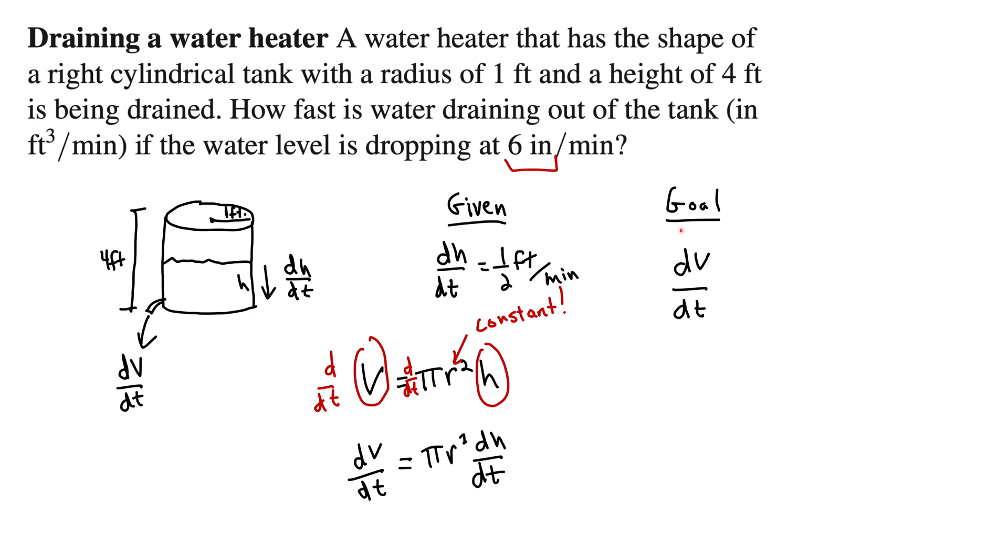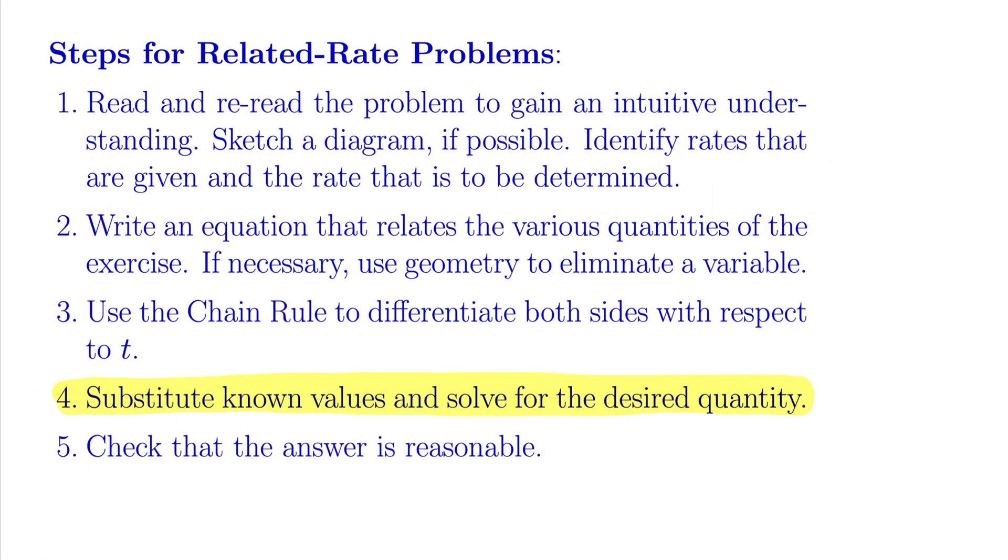And look, our goal is in reach. Our goal was dv dt, and here we are, indeed, at dv dt. Okay, checking in with our steps again. We have substitute known values and solve for the desired quantity.